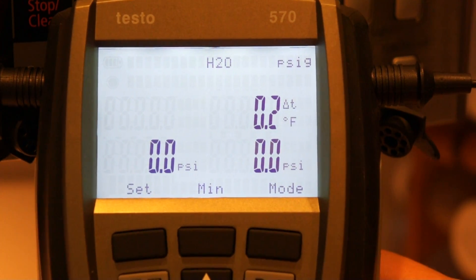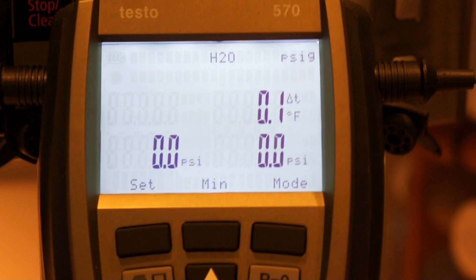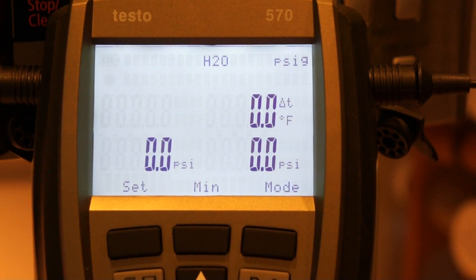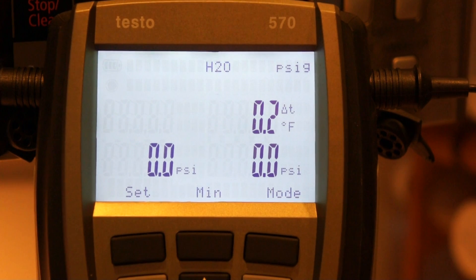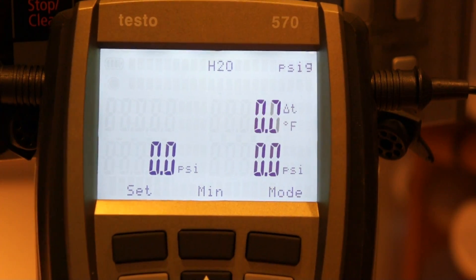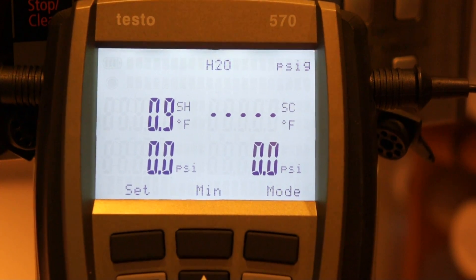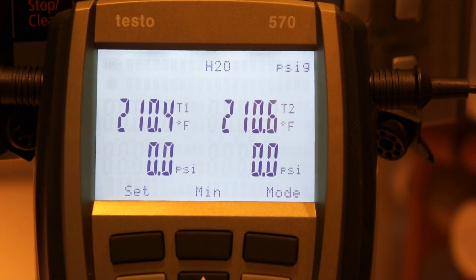You're going to get small changes in the water just because it's moving around and you're going to see that. So that's not anything abnormal. You can see those two temperature probes are running almost right on the money with each other all the time. And again, we have no subcooling and just a small amount of superheat on the display.